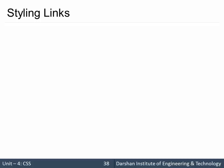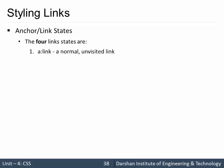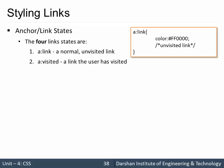Hello everyone. In today's session we are going to discuss about styling links in CSS. Links have different states — there are mainly four states of a link in CSS. The first is the 'link' state, where that particular link is unvisited by the user. The next is 'visited', where the user has visited that particular link.